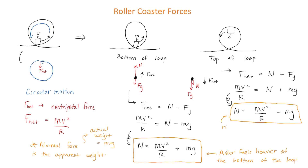The normal force — representing the object's apparent weight — is smaller than when the rider was at the bottom of the loop. That's why riders feel lighter at the top of loop-de-loops; you might actually feel almost weightless.